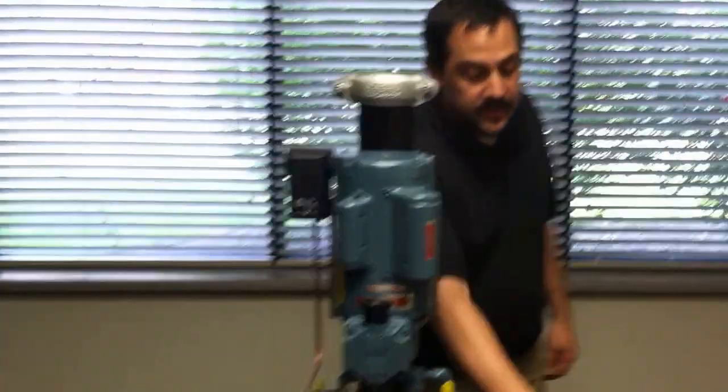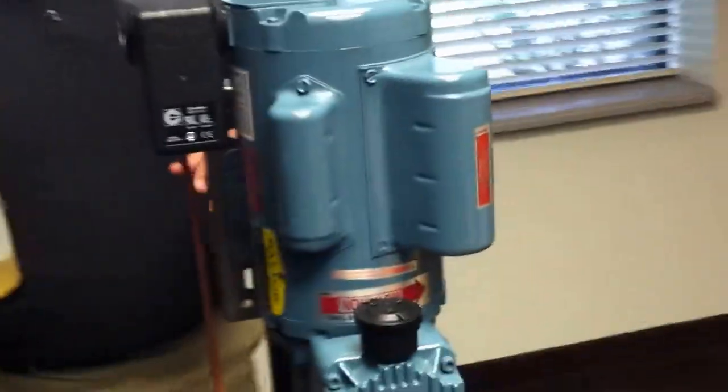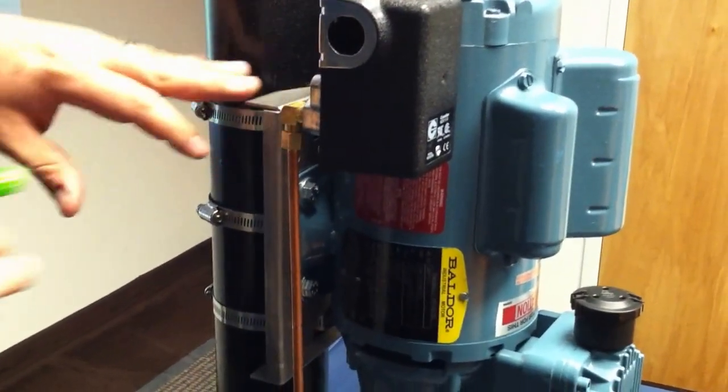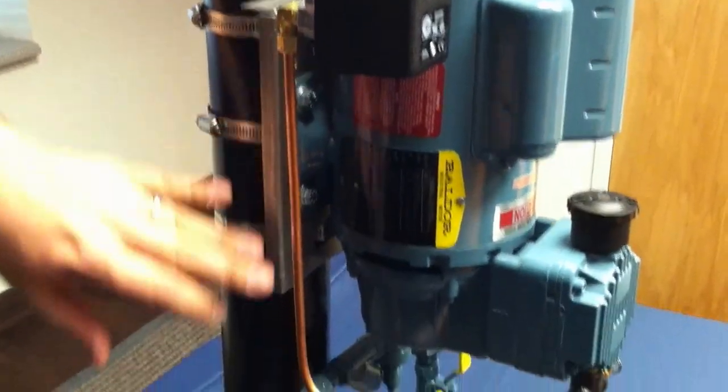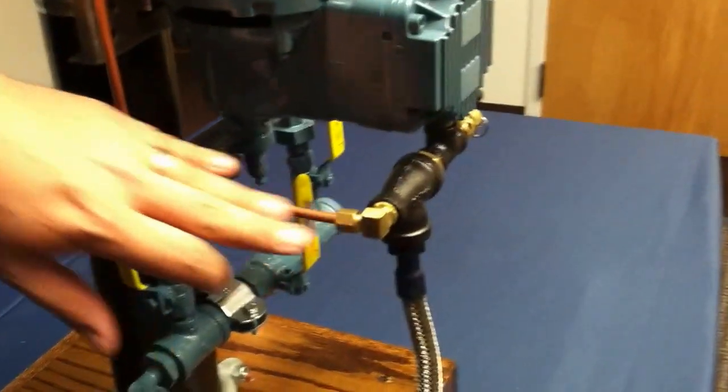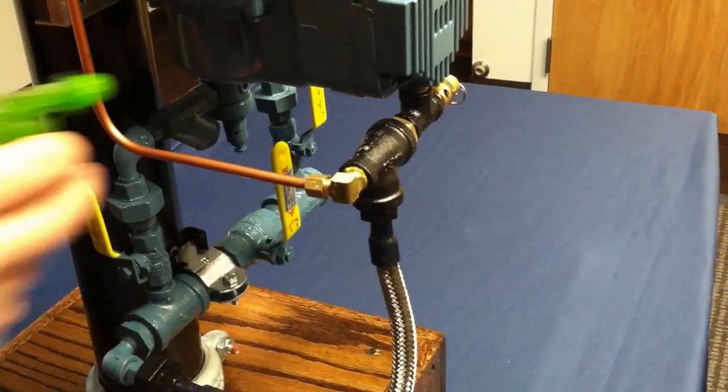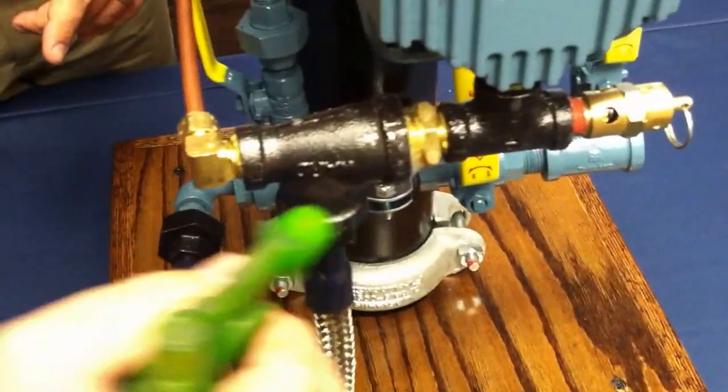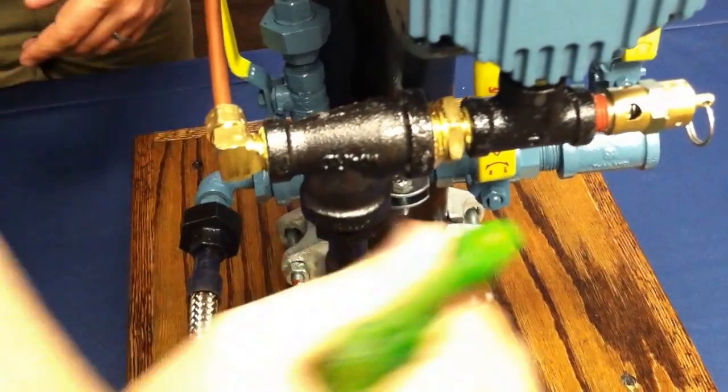First thing you do is take your soap bottle and spray every joint and union between the end of the pressure switch here through the T up here. You want to make sure that you get the check valve here as well as the safety valve over here.